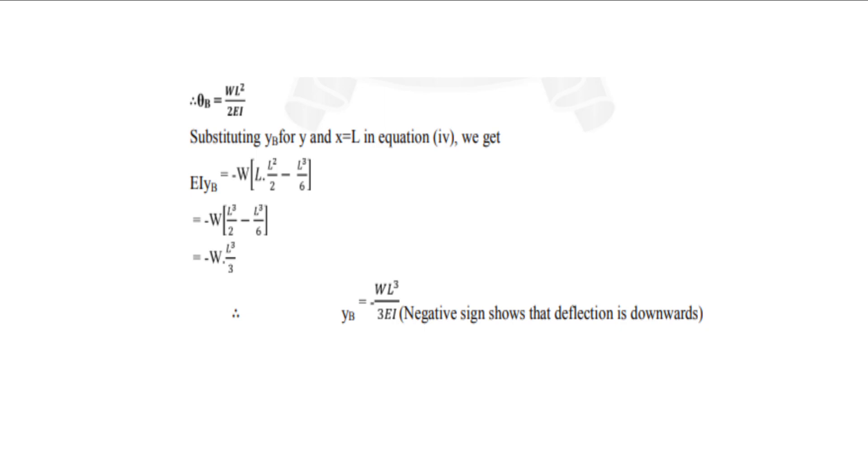Substituting yB for y and x=L in equation we get -W × L³/3. Therefore yB is equal to WL³/3EI. That negative sign shows the deflection is downwards. So this is the final solution. Thank you.